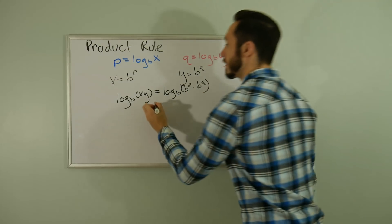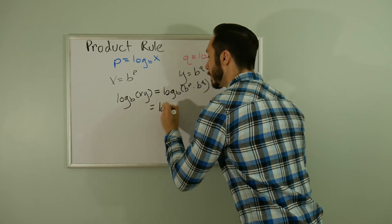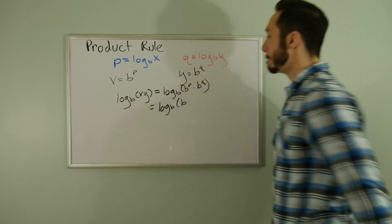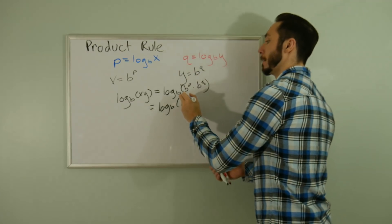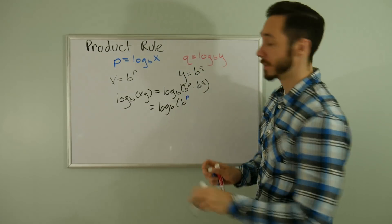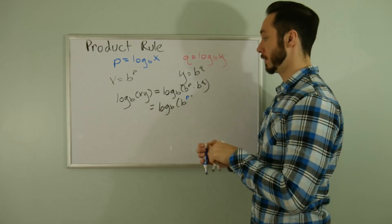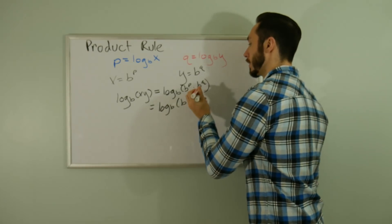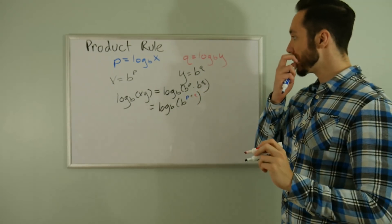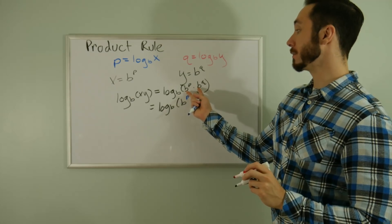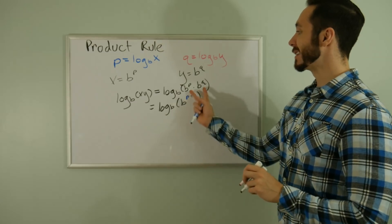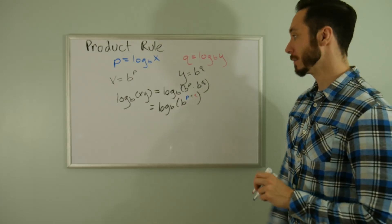Now I can take a look at what's going on inside the parentheses. This is actually just equal to log base B of B to the power of P plus Q. It's a rule of exponents - if you have two bases being multiplied, same exact base, you can add the powers up.